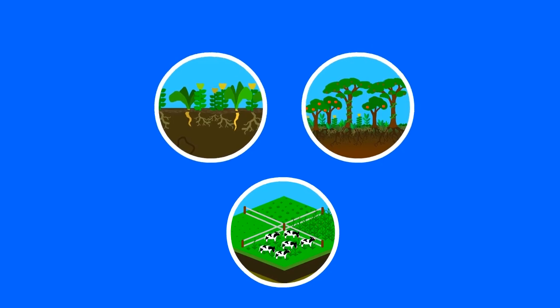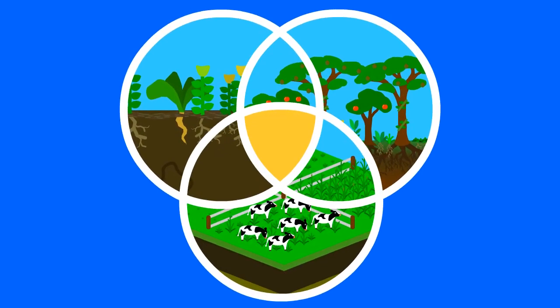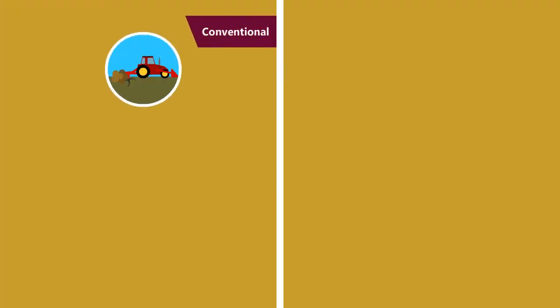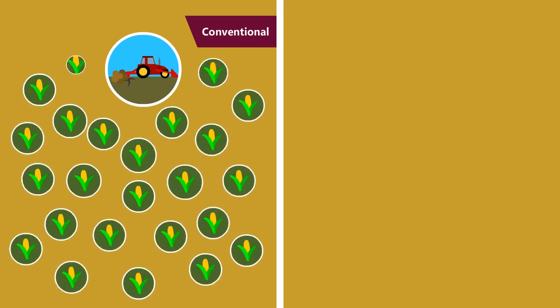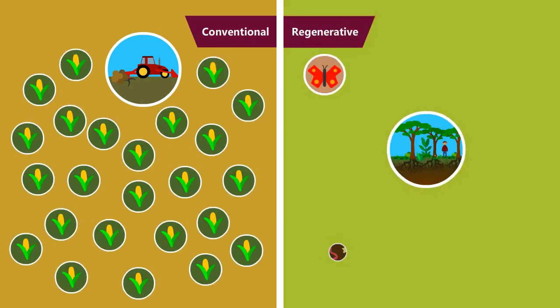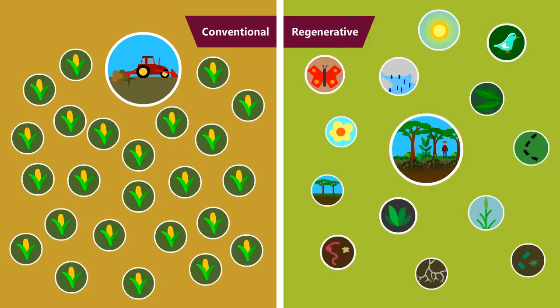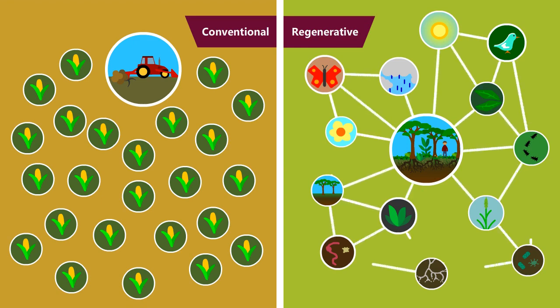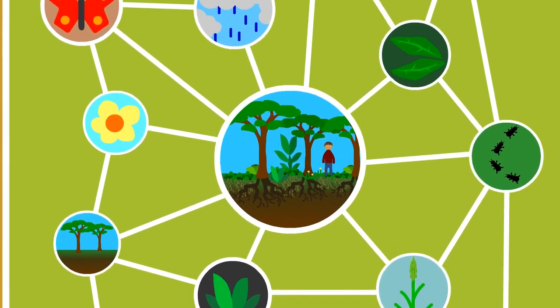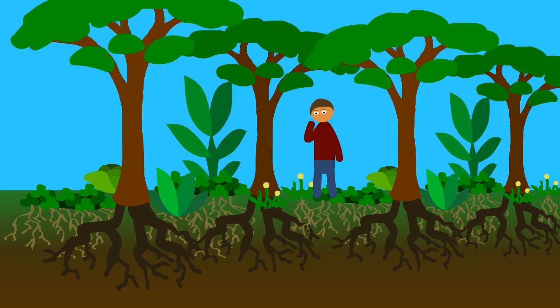These three examples of regenerative agriculture plus all the rest of them all have something in common. Whereas in conventional agriculture you seek to create as many of one thing as possible, in regenerative agriculture you seek to create as many relationships between things as possible. You are one of those things. What sort of relationship with the land do you want to foster?